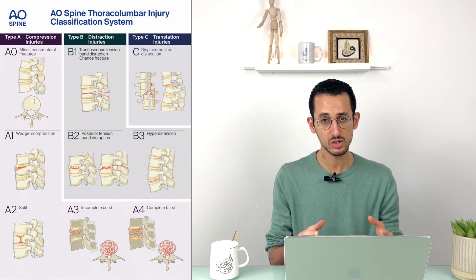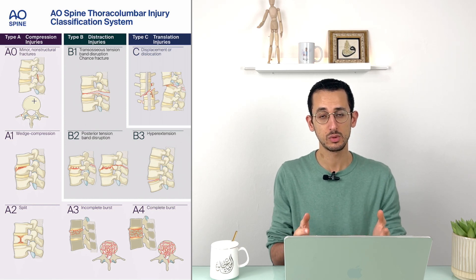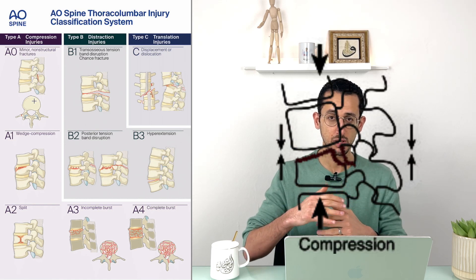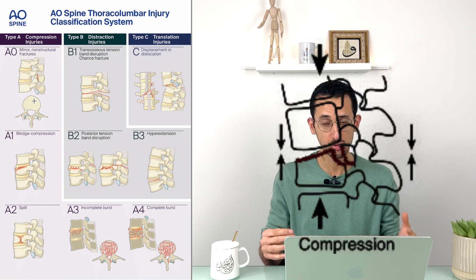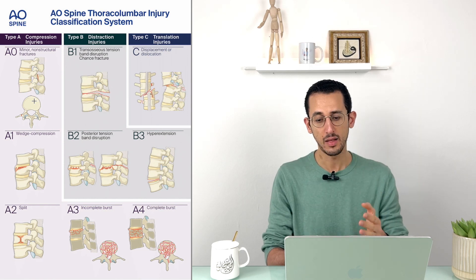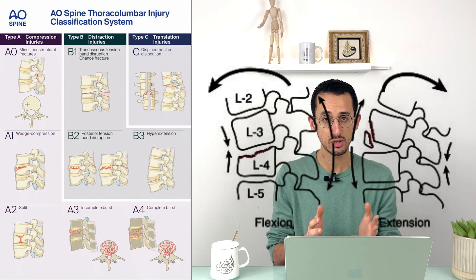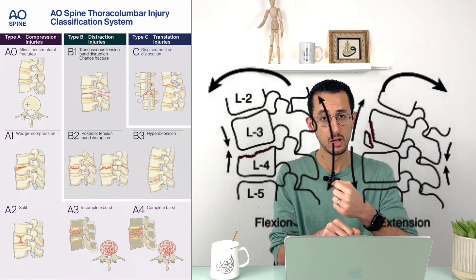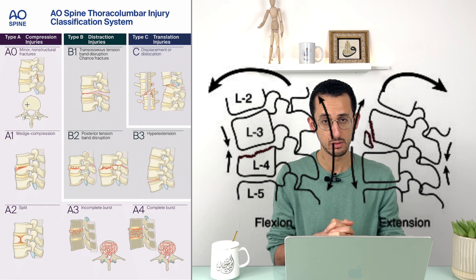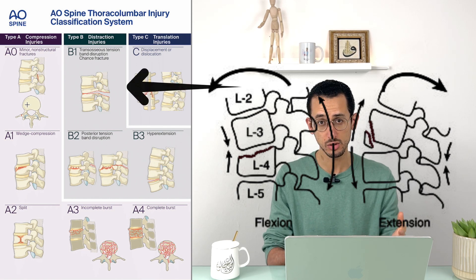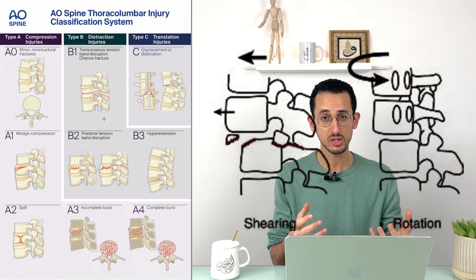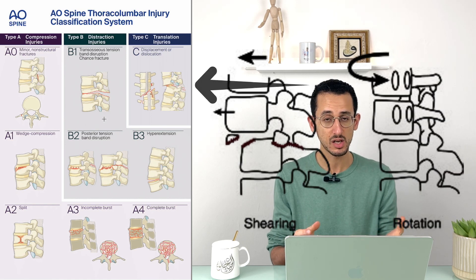The type describes the morphology of the fracture. Axial pressure on the spine leads to compression-type injuries, which are all Type A. Some sort of distraction injuries — meaning either excessive flexion or extension of the spine — leads to Type B injuries. And if there is some sort of displacement or dislocation, which is the translation injury, that happens in Type C.